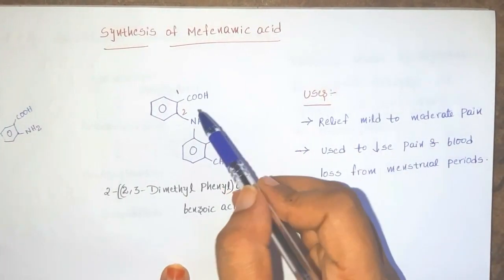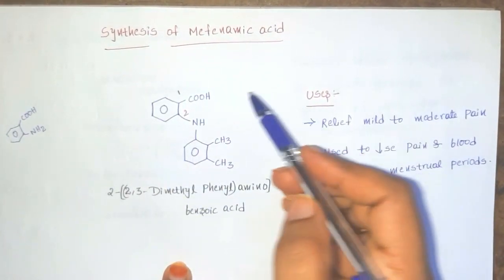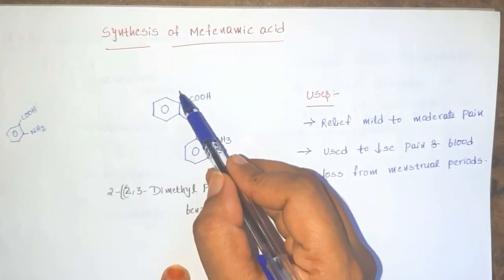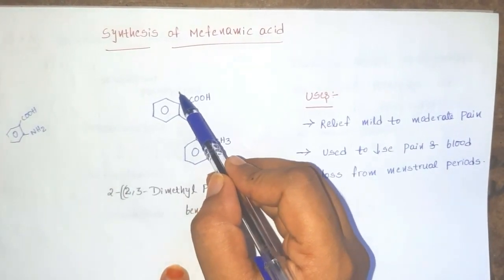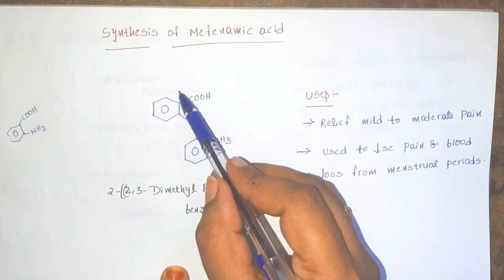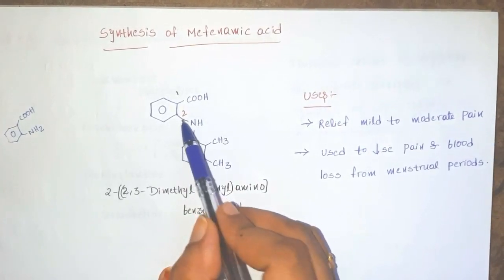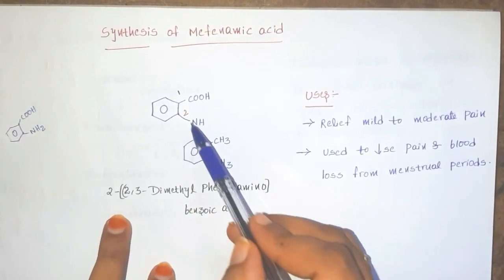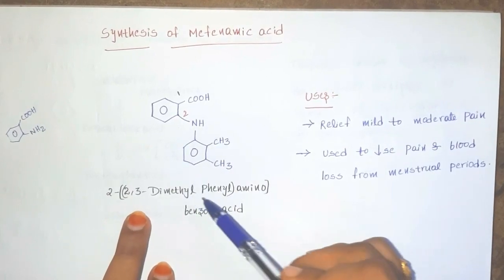Next, let us give the numbering to the mefenamic acid structure. Numbering starts from the acidic group, that is carboxylic acid. So this is number one, this is number two. So in second position it is attached with dimethyl groups.